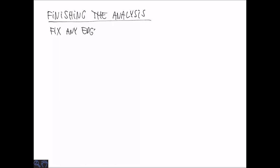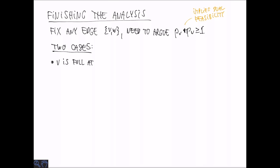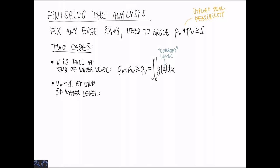So let's wrap up the analysis. So there are two things to do. So first of all for every edge V, W we need to be able to argue that the sum of the dual variables is at least one because if this is true for every edge V, W in the graph this gives us dual feasibility. There are two cases we can consider. One is where the vertex V is full at the end of the water level algorithm. So in this case we are simply going to lower bound the sum of PV and PW by PV and the value of PV is simply the integral from zero to one of G of Z where Z indicates the current level of water.